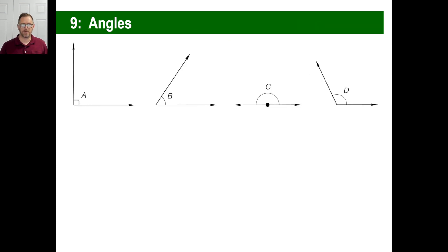Angles. You should know some things about angles. Make sure you know the names of these. The angle A is a right angle. This is 90 degrees. Angle B is called an acute angle. It's less than 90.